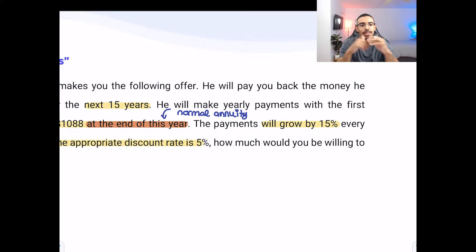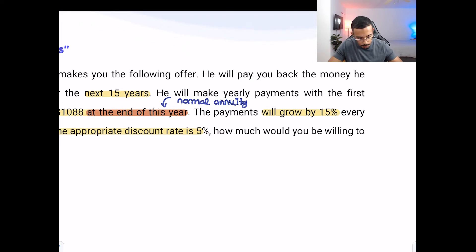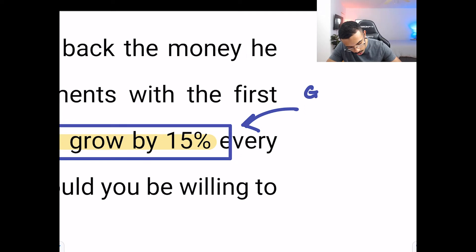But then we're also told that it's growing by 15% every year. That one payment is growing by 15% every year. Now logically, we know that we have three types of annuities. It can't be an annuity due because this is happening at the end of this year. But we also know that it's growing. Therefore, it's obvious that we're dealing with a growing annuity.